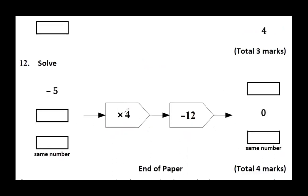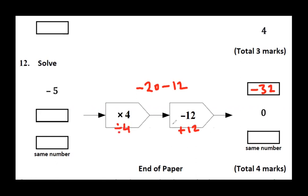Question number 12: The function machine is times by 4, subtract 12. Minus 5 times 4 gives minus 20. Minus 20 subtract 12 gives minus 32. And if the output is 0, we do the inverse operation which is plus 12 then divided by 4. So 0 add 12 gives 12, and 12 divided by 4 gives 3.